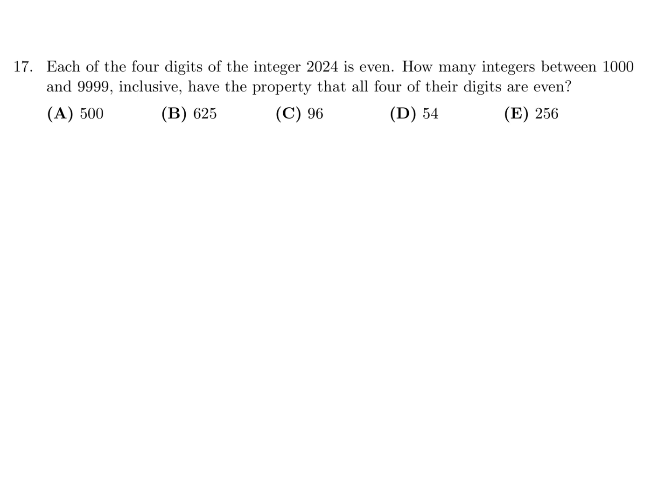Each of the 4 digits of the integer 2024 is even. How many integers between 1000 and 9999 inclusive have the property that all 4 of their digits are even? Well, it's a good thing that they put a 0 in there because some people may not remember that 0 is even. So we have 4 digits, right? And these numbers are between 1000 and 9999 inclusive. So the first digit, if we want it to be even, we have choices 2, 4, 6, or 8. Correct? The second one, we now have 0, 2, 4, 6, or 8. Because for the first one, you can't put 0 because if you put 0, it would not be a 4-digit number.